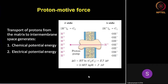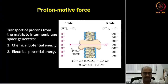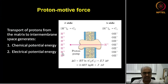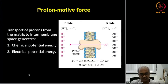We saw how the electron finally goes to reduce oxygen to water — that is the electron transport part. In the process, protons are being pumped across the membrane into the intermembrane space. Today we are going to focus on how this proton gradient — high concentration in the intermembrane space and low in the matrix — drives ATP synthesis.